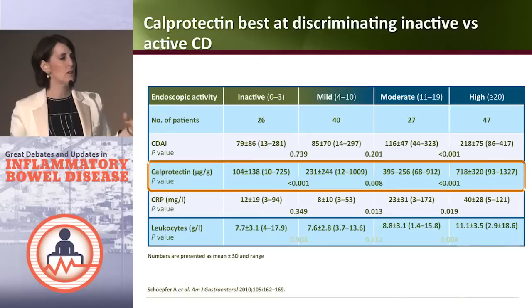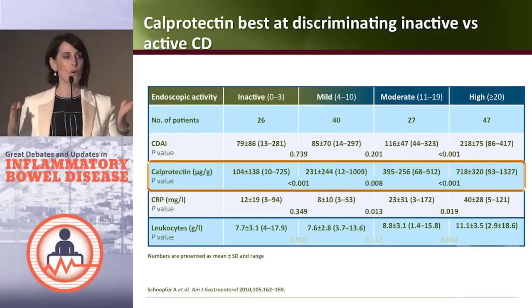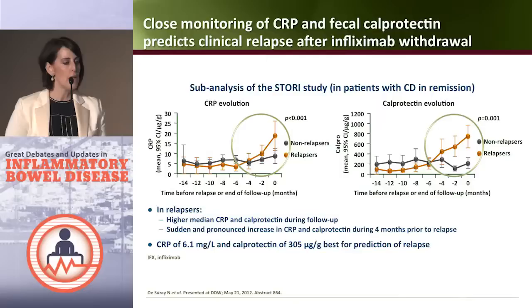There are few studies specifically correlating calprotectin with mild, moderate, or inactive disease endoscopically. One study published in 2010 suggested that above 400 correlates with more moderate disease activity, above 700 with more severe or high disease activity, and below 250 likely represents mild disease with less need for intervention. In the post-op state, however, there may be a different threshold that is acceptable.